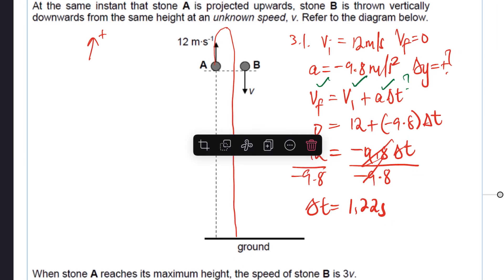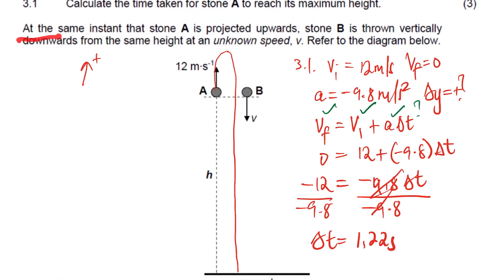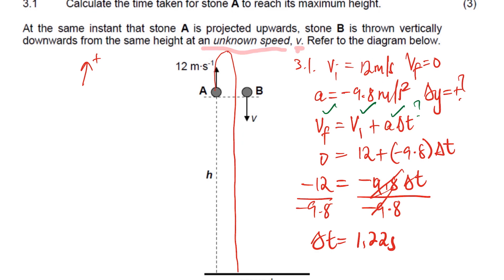Now let's read the statement below 3.1. At the same instant that stone A is projected upwards, stone B is thrown vertically downwards from the same height, at an unknown speed V. So this happens simultaneously — when stone A is thrown vertically upwards, stone B is thrown vertically downwards with initial velocity V. As stone B goes down, its velocity increases, but in the negative direction, because upward is positive.